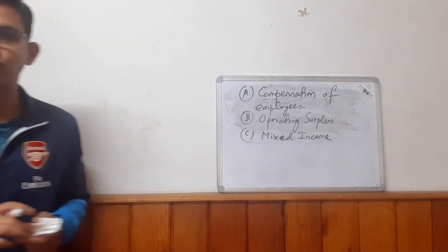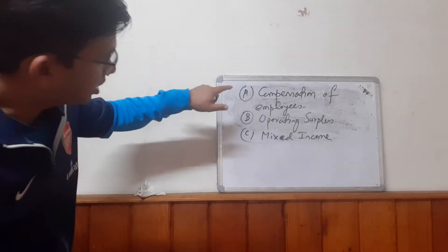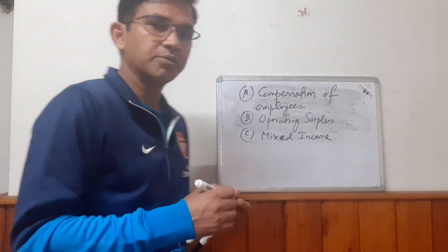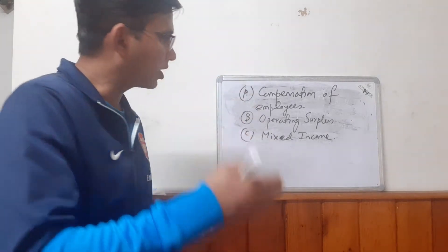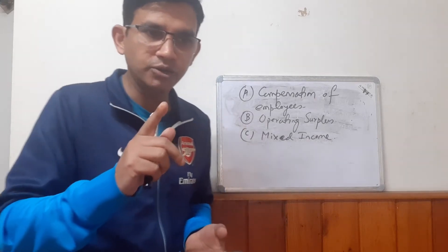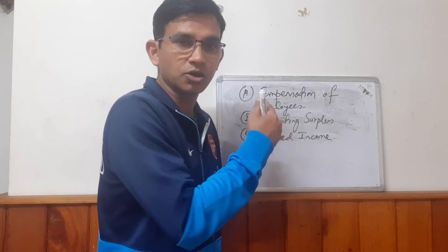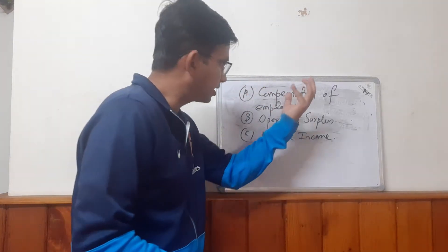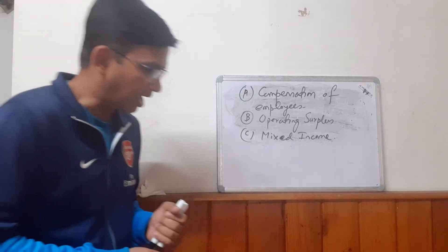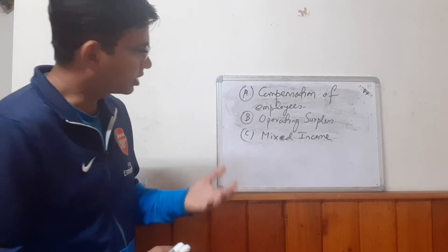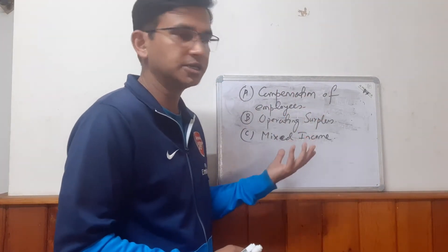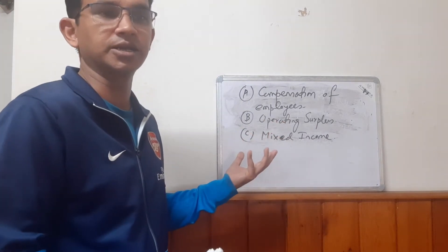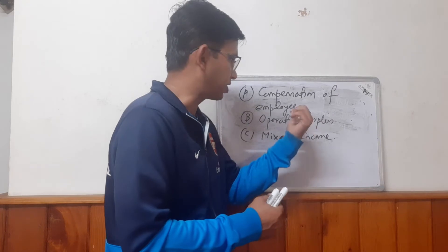But we have to add one more component which we have not yet considered. We are considering compensation to employees, operating surplus, and mixed income inside the domestic boundary. But remember, all the factors of the country are not operating inside the country, and all factors operating inside the country are not domestically owned — foreign factors may constitute any part of this. For example, if we consider Daimler, which is a British company operating inside the US market, its operating surplus — the profit of Daimler — is not a part of US national income and should be excluded.